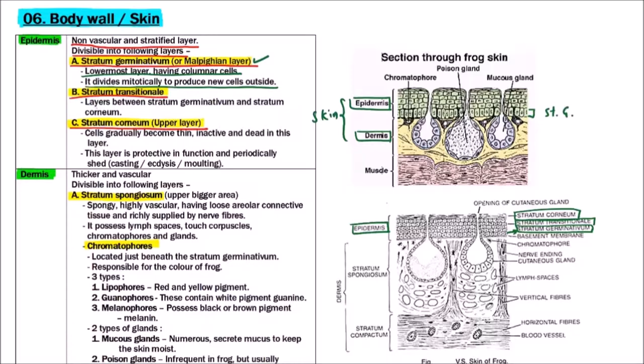Next is stratum transitional. Layers between stratum germinativum and the uppermost layer, that is stratum corneum, are basically termed as stratum transitional.